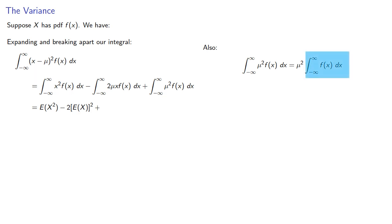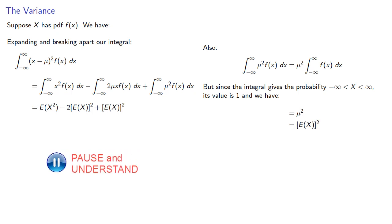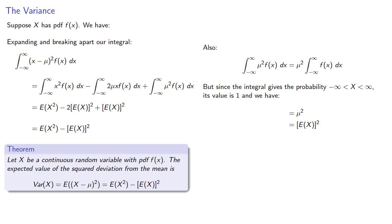The integral from minus infinity to infinity of f of x dx gives the probability our random variable is in the interval from minus infinity to infinity, which must equal 1. So this integral becomes mu squared, which is the square of the expectation. This gives us a nice computing formula: let x be a continuous random variable with PDF f of x. The variance equals the expected value of x squared minus the square of the expectation of x.